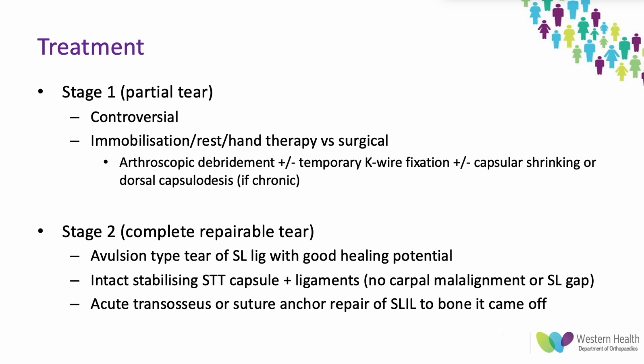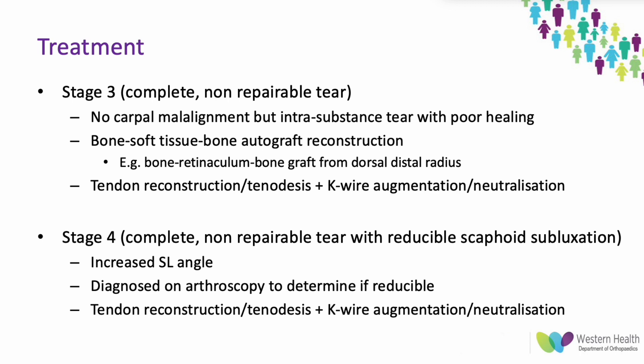For Stage 2, where there are repairable tears, a transosseous repair or suture anchor repair of the scapholunate ligament back to bone is thought to be successful. For Stages 3 and 4 with non-repairable tears, previous techniques included bone-soft tissue-bone autografts such as a bone-retinaculum-bone graft from the dorsal distal radius. Current evidence favours tendon reconstruction or tenodesis with K-wire augmentation for better outcomes. Stage 4 reducible subluxation similarly requires tendon transfer or tenodesis with K-wire augmentation, generally confirmed on arthroscopy.